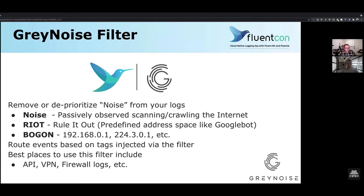They're blasting the entire internet with this brute force. Riot is the second category, which stands for 'Ruled Out' — these are predefined address spaces like Googlebot or Bingbot, where Google or Bing themselves are saying these subnets are dedicated to their bots or crawlers. GrayNoise internally has a framework that collects all of those resources and constructs what we call our riot dataset. The third category is bogon, which is private IP space — like 192.168, multicast IP space, or any IP space that isn't public IPv4 space according to the various RFCs.